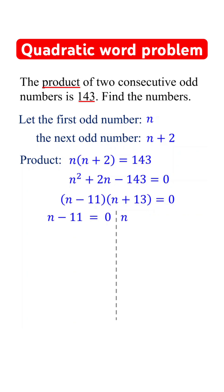Now, set each factor equal to 0. From these equations, we find that n equals 11 or negative 13.